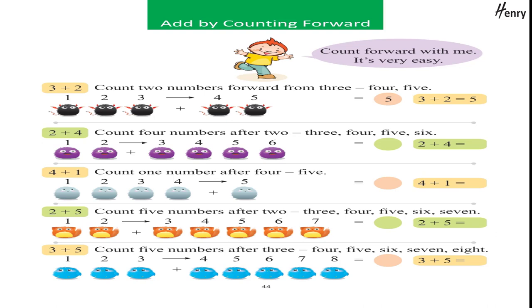2 plus 5: count five numbers after 2 — 3, 4, 5, 6, 7. 3 plus 5: count five numbers after 3 — 4, 5, 6, 7, 8.